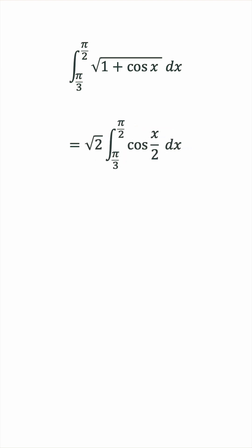But be careful. The square root of x squared is not equal to x. It's actually equal to the absolute value of x, because x itself can be negative. So really, we have to put the absolute value around the cosine x over 2.